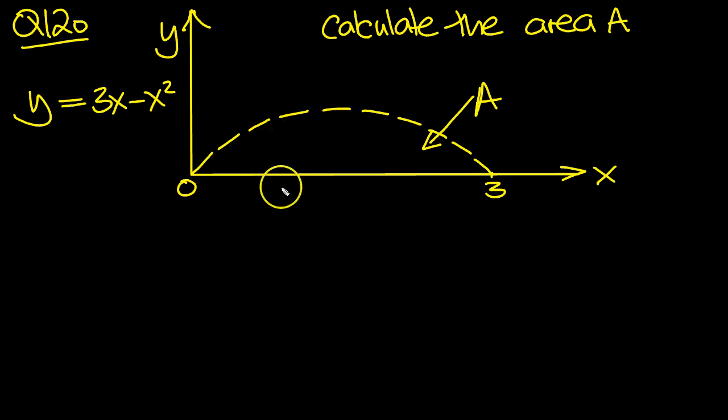So I paraphrase the question here then. Let's have a look at it. So here the area is equal to the definite integral between 0 and 3, and it's 3x minus x squared.